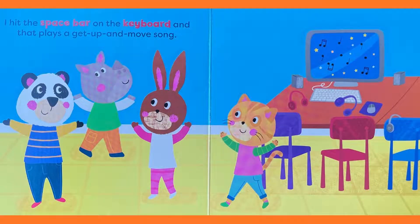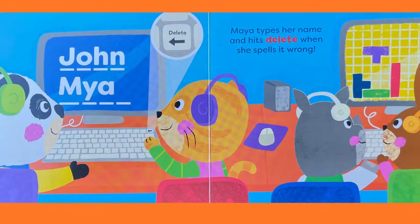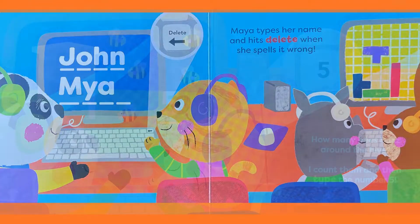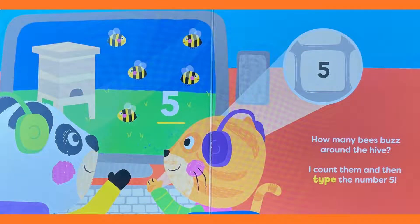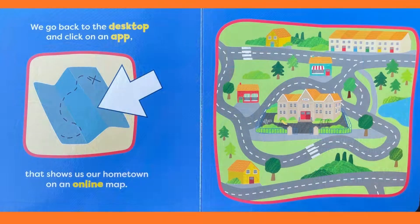I hit the space bar on the keyboard, and that plays a Get Up and Move song. Maya types her name and hits Delete when she spells it wrong. How many bees buzz around the hive? I count them and then type the number 5. We go back to the desktop and click on an app that shows us our hometown on an online map.